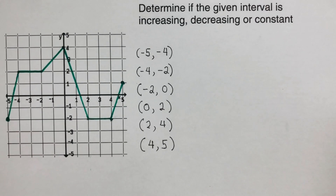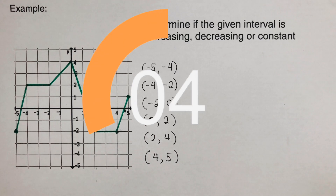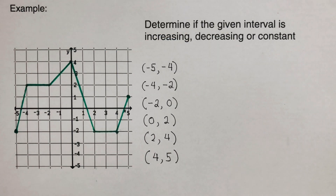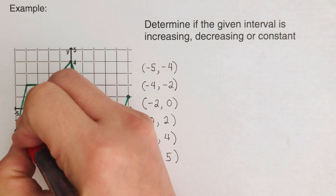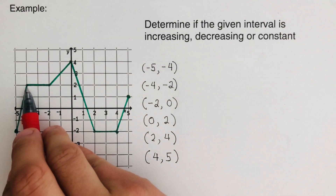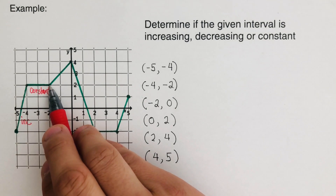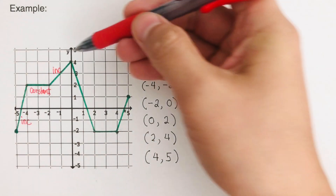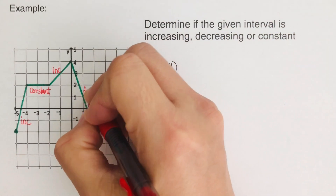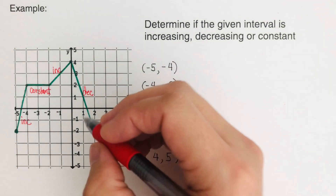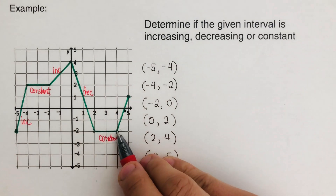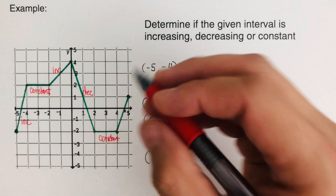Pause the video and try the next problem on your own, then check your answer. The tip is to trace the graph from left to right: uphill is increasing, downhill is decreasing, and a horizontal line is constant. Tracing through this graph, we can identify sections that are increasing, constant, increasing again, then decreasing, then constant, then increasing once more.